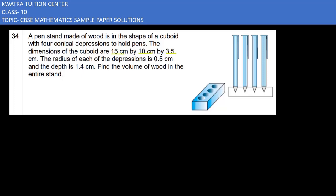Next, you have given dimensions of the cuboid. What is given? Cuboid dimensions: length is 15 cm, breadth is 10 cm, height is 3.5 cm.